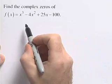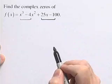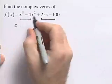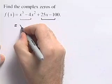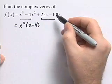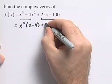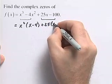We'd like to start by factoring by grouping. Group the first two terms together and the second two terms together. Out of the first two terms, we can pull out an x squared. So we'll get x squared times x minus 4. And the second two terms here, we can pull out 25. So we'll have plus 25 times x minus 4.